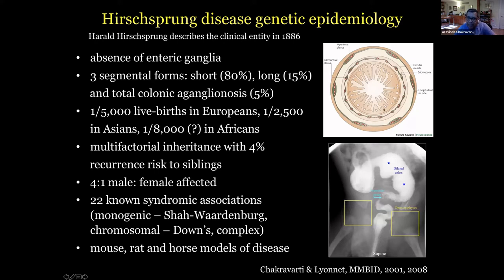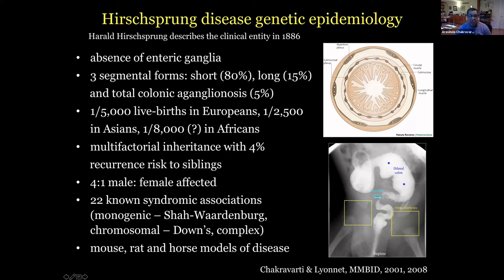It doesn't have neurons. Here are the layers of the gut — this is a transverse section — and it is this myenteric and submucosal plexus comprising the enteric nervous system that is missing in a portion of the gut, and sometimes the entire gut. The question is: what are the developmental and genetic reasons why this cell type fails to develop? There are many forms — short and long — depending on how much of the gut is affected. It's got variable frequency, about one in 5,000 in Europe, about twice that in Asians, and appears to be relatively rare in Africans.